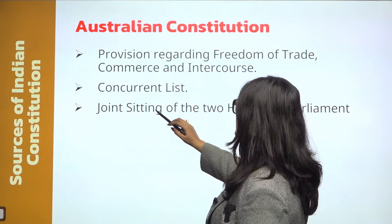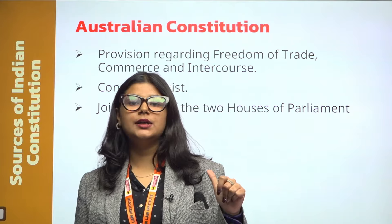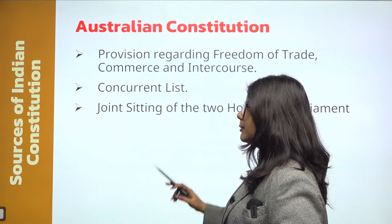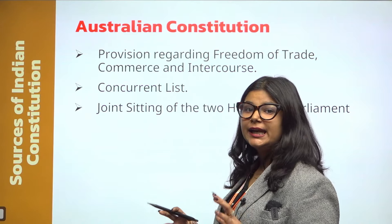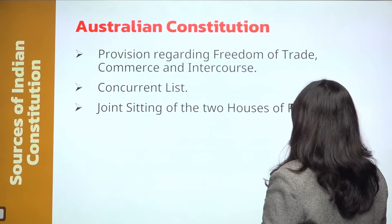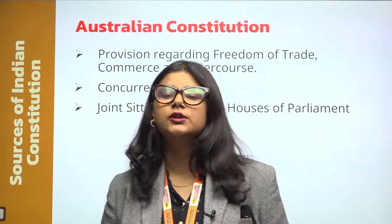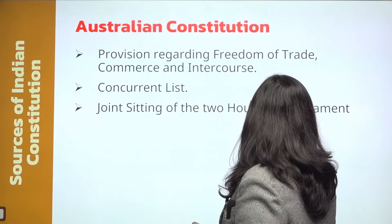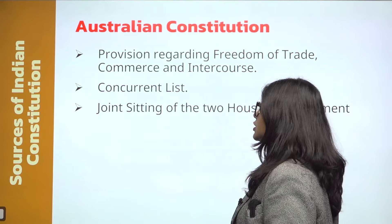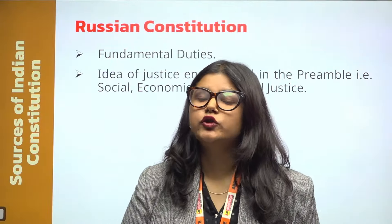Now let's look at the Australian Constitution and which important features our Constituent Assembly adopted into our Indian Constitution. First is the provision regarding freedom of trade, commerce and intercourse — adopted from the Australian Constitution. Next is the Concurrent List. The concurrent list among the three lists — Union, State, and Concurrent — is also adopted from the Australian Constitution.